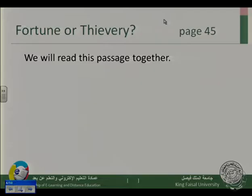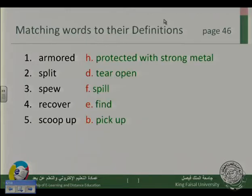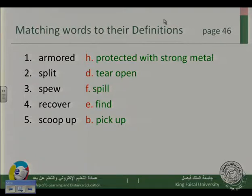That was the reading passage. There are vocabulary items in the reading passage that you should match to their definitions on page 46. The answers are: armored means protected with strong metal; split means to tear open; spew means to spill; recover means to find; scoop up means to pick up.